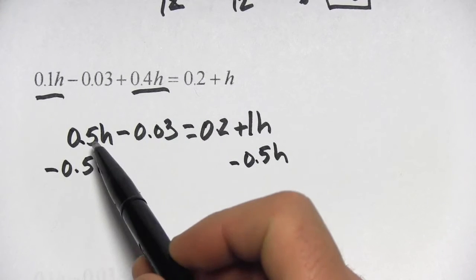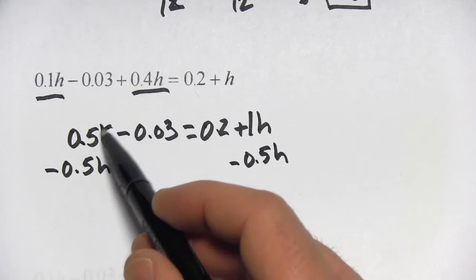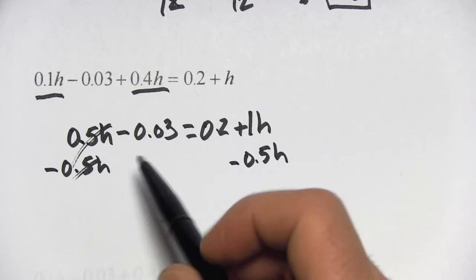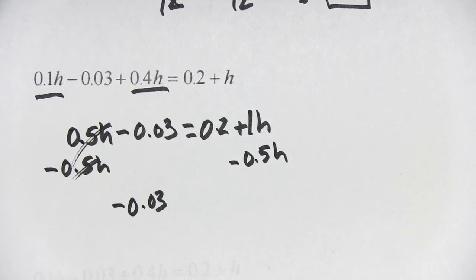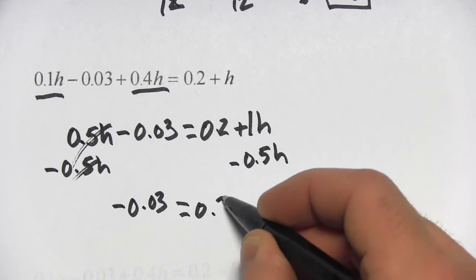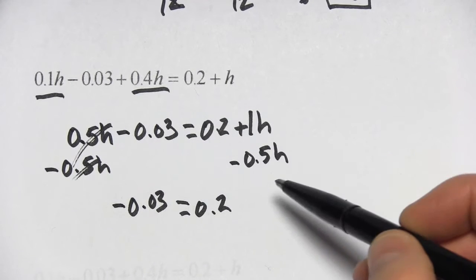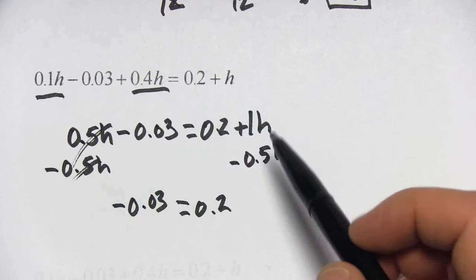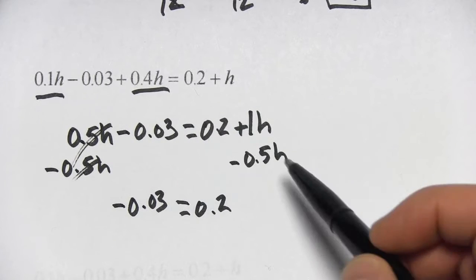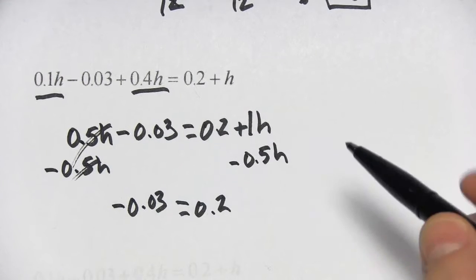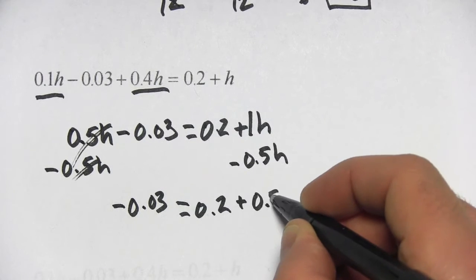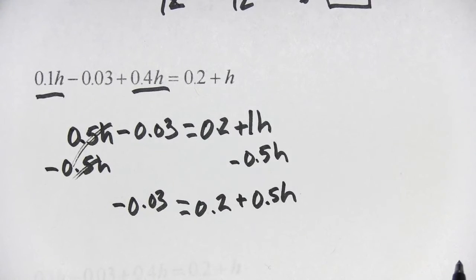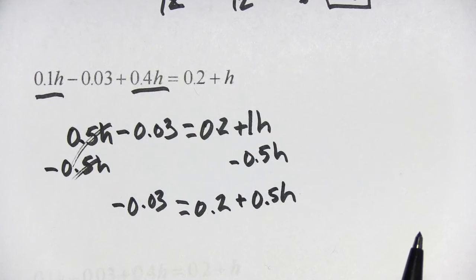So on this side, 0.5h minus 0.5h, that's 0. So all I'm left with is negative 0.03. And on this side of the equation, I have my 0.2 and then 1 minus 0.5. Use your calculator if this gets confusing. That is 0.5. This is plus 0.5h. So far so good.